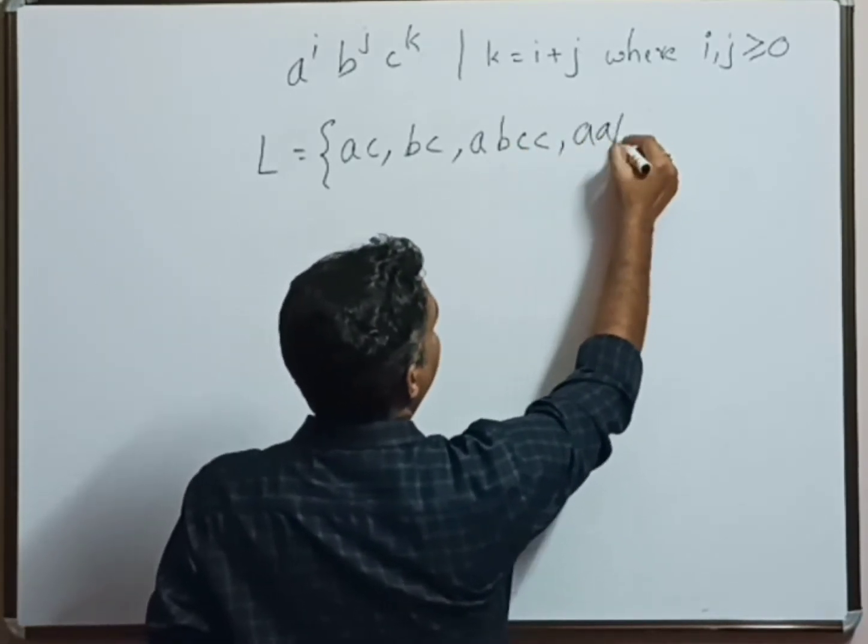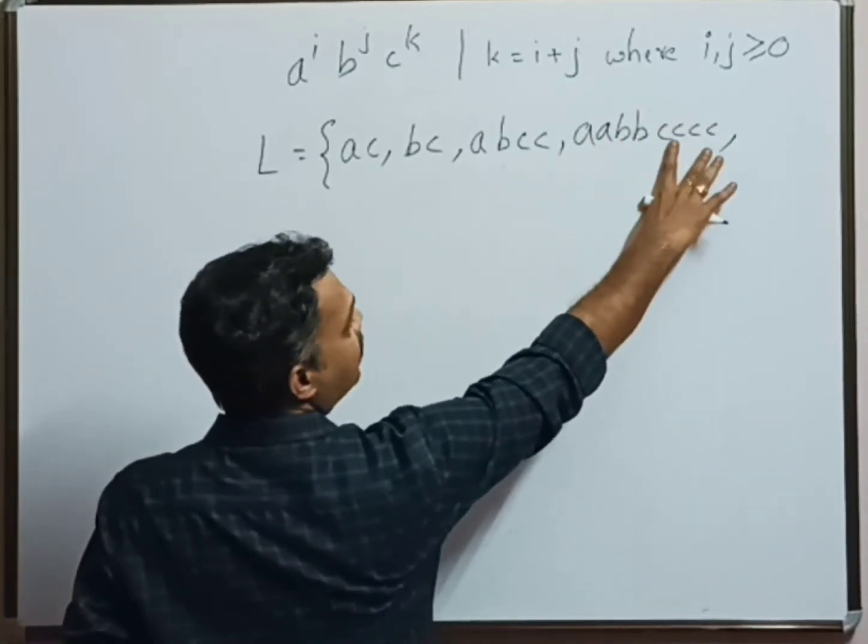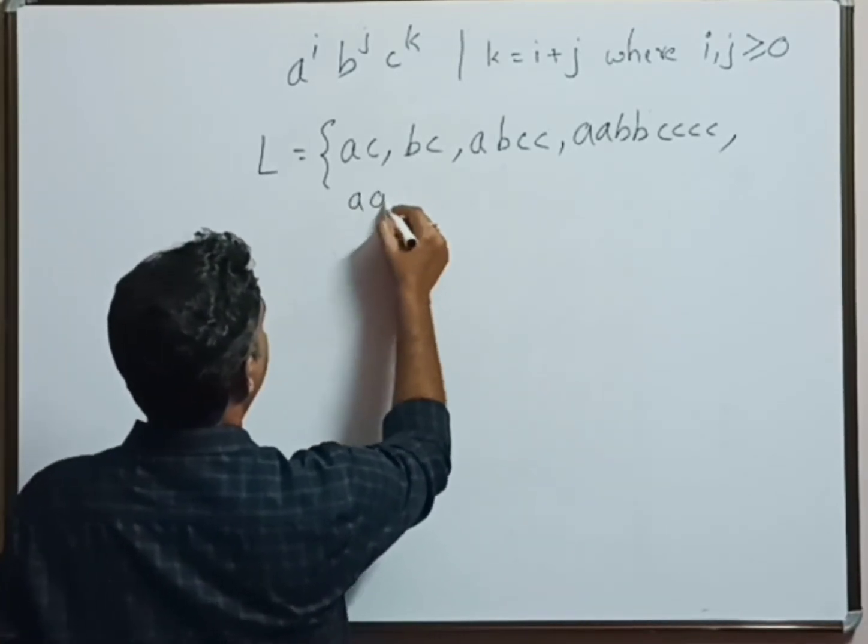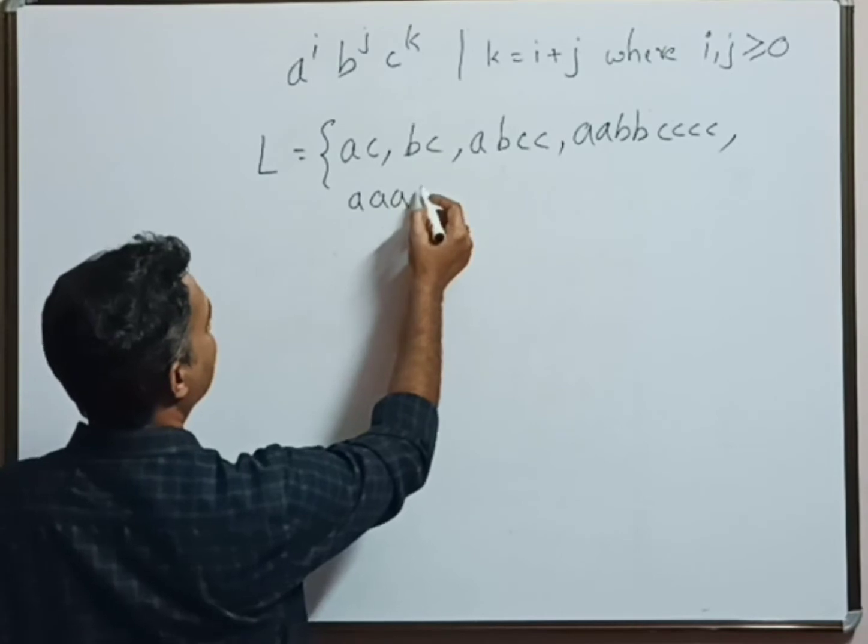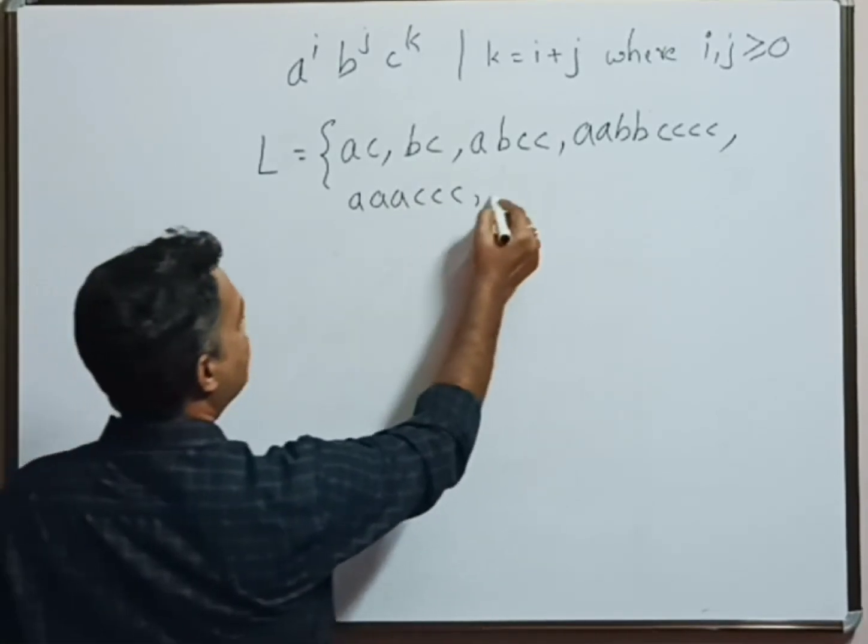It can be aabbcccc - two a's, two b's, so four c's. And it can be aaaccc - that is also possible, and so on.